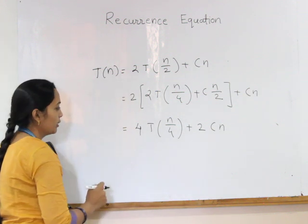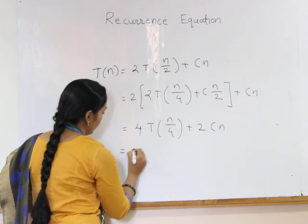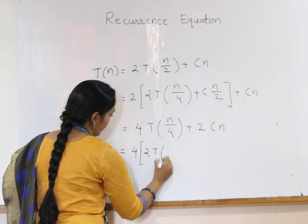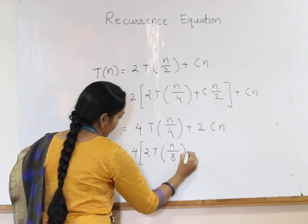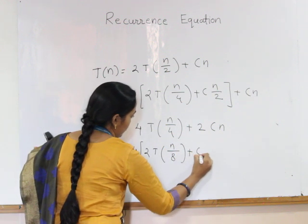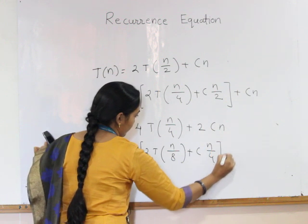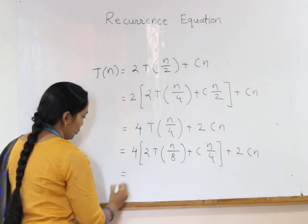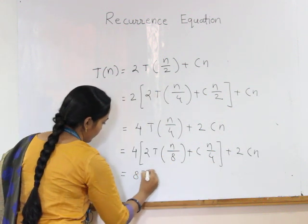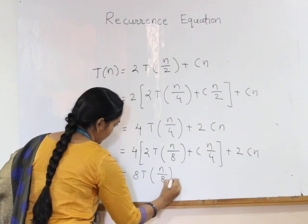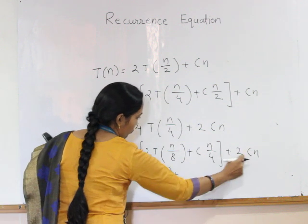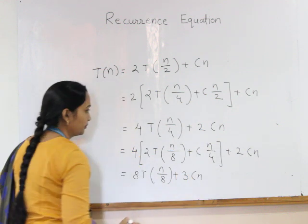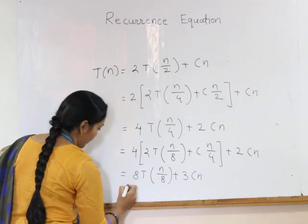Again, we solve this for T of n by 4. For that, we take 4: 2T of n by 8 plus cn by 4 plus 2cn. It equals 8T of n by 8 plus 2cn plus cn, which equals 3cn. Now, we can rewrite this as...